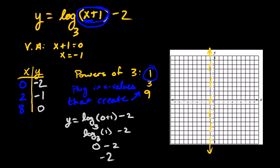And go ahead and graph those. So 0, negative 2, 2, negative 1, and 8, 0. And you're just going to make a nice curve down and curve up.